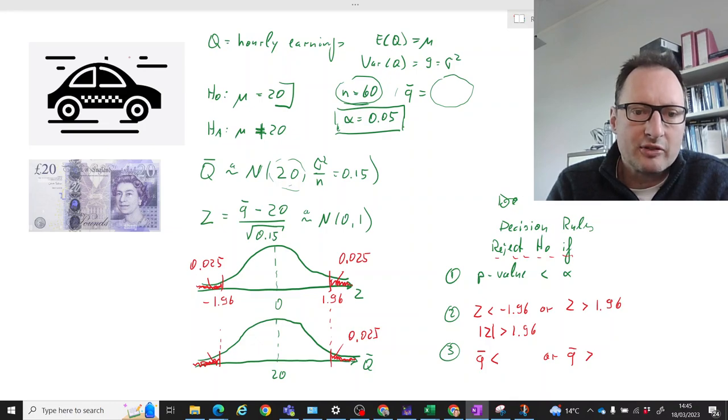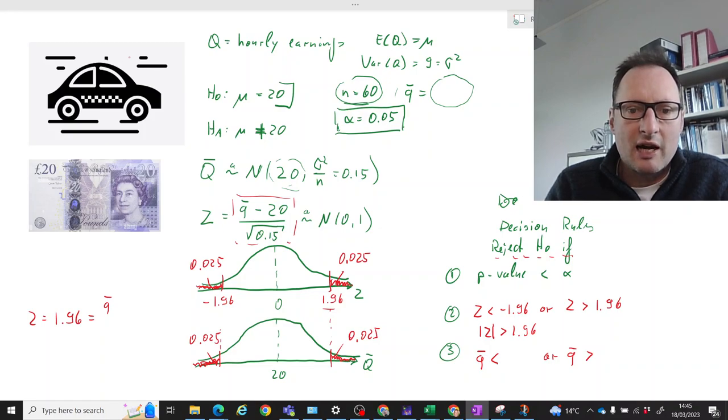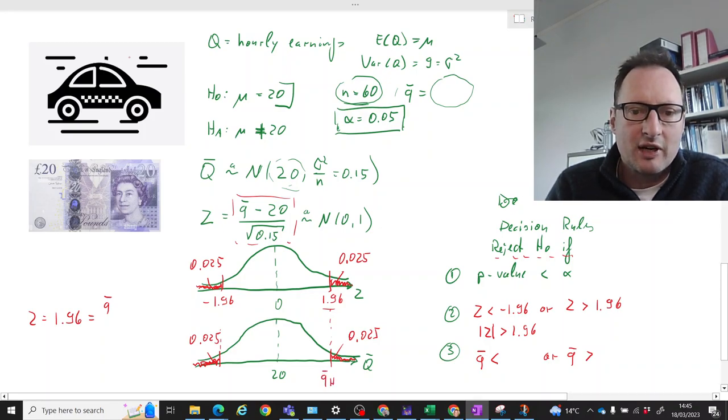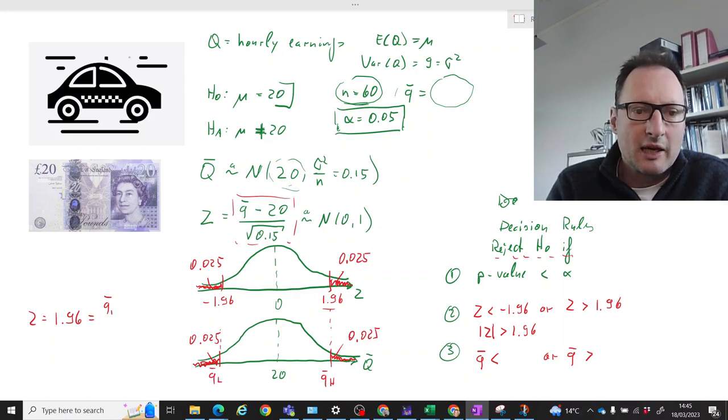Of course you don't have a table where you could read that off. You had a table where we could read this value of 1.96. So we'll use our translation formula. If Z equals 1.96, we can get Q-bar - this is now a high value. Q-bar H minus 20 divided by square root of 0.15. Now when you calculate that, you can solve that for Q-bar H, you will get 20.76 rounded to full pence.